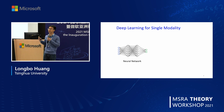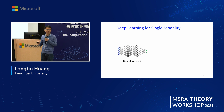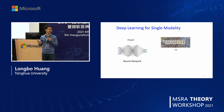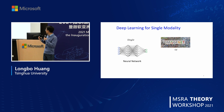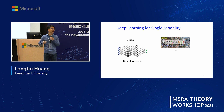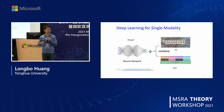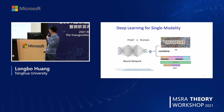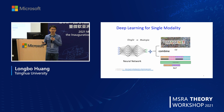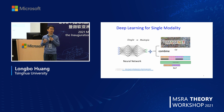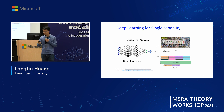In deep learning, people have been using single modality training for many applications — for example, computer vision, where many good algorithms have been developed since the birth of neural networks, and NLP, where transformer-based algorithms are also making very good progress. Recently, people have started to combine different modalities and observe very good advancement.